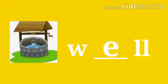Now children, see what picture is this? This is well. W-L-L. So what letter is missing over here? Yes, E. W-E-L-L. Well.